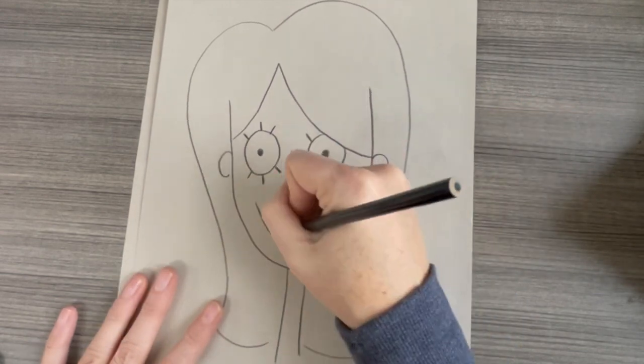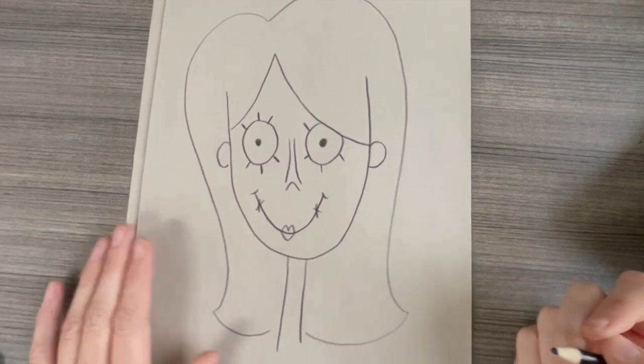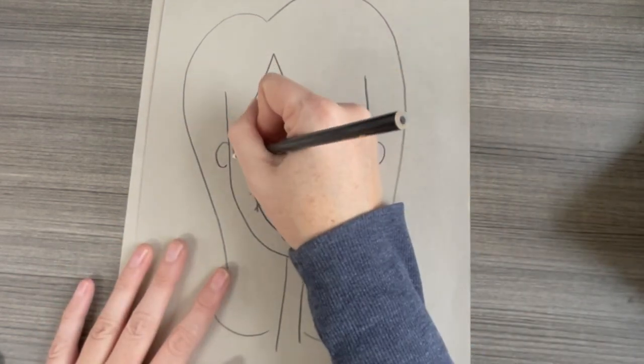Once that's sketched in and you have it the way you want it to look, we'll go in and add dimension and depth through shading. This will give your Tim Burton sketch some shape.